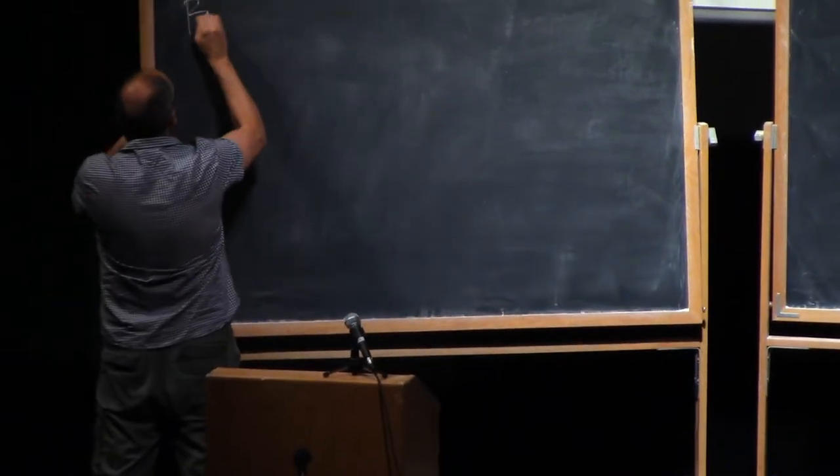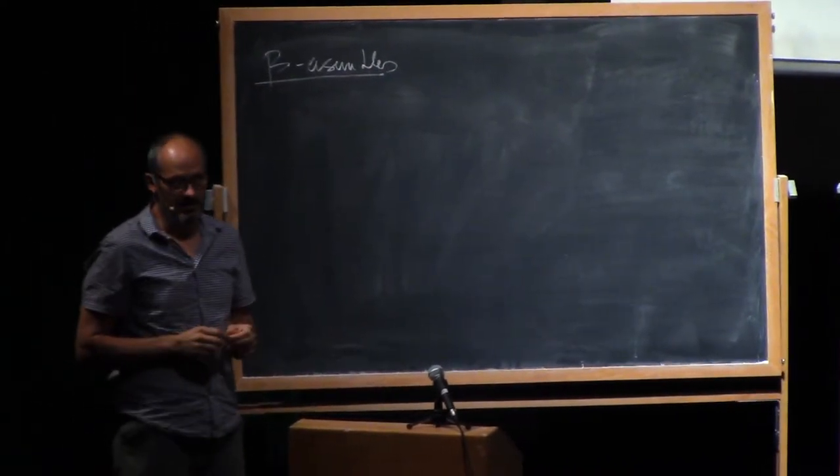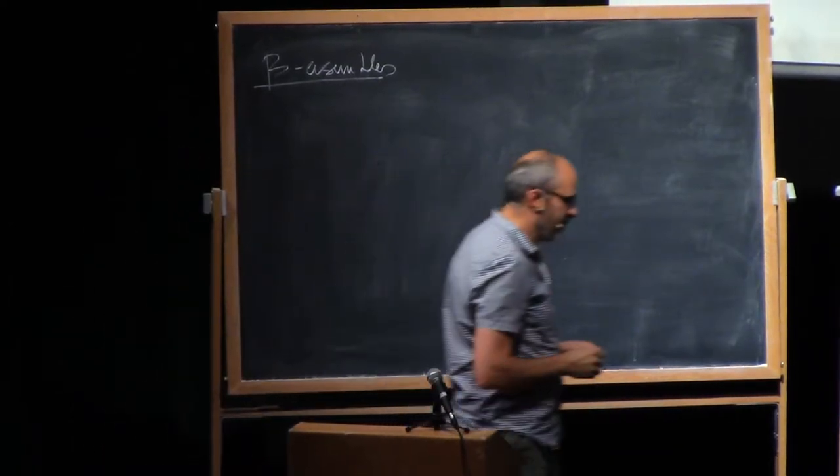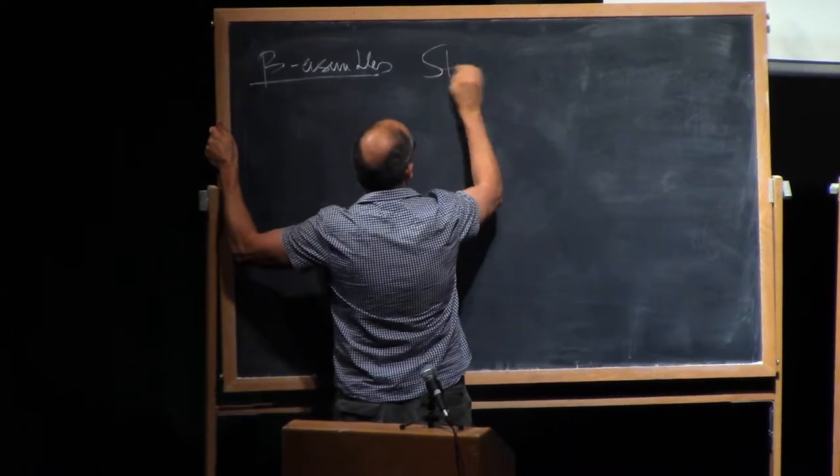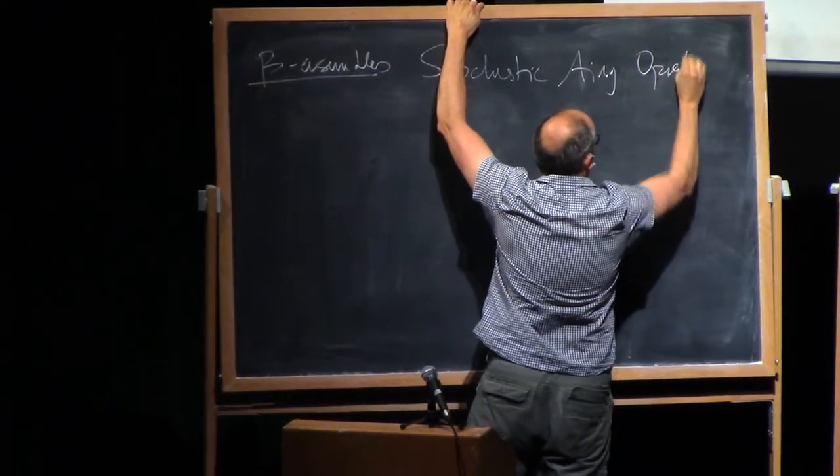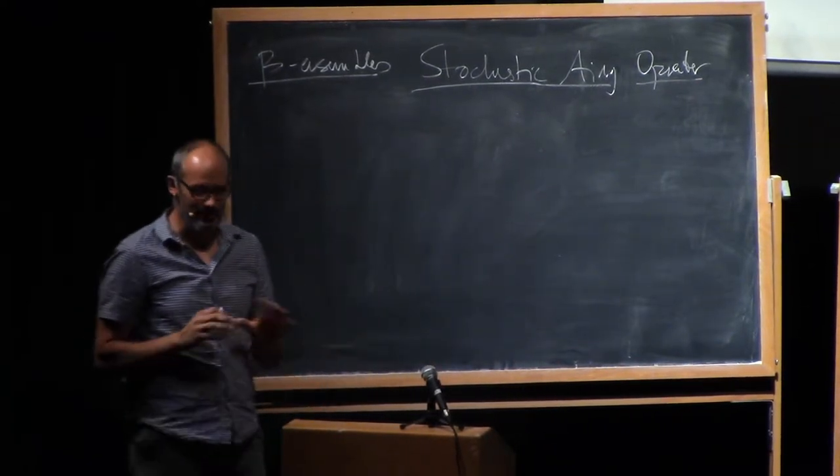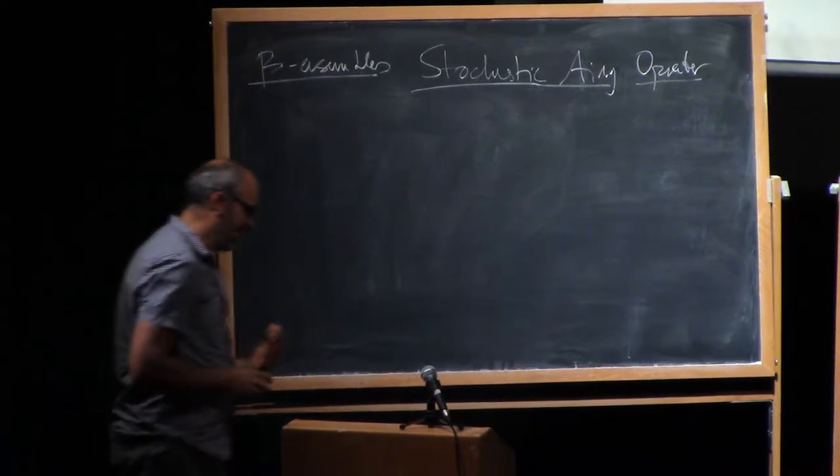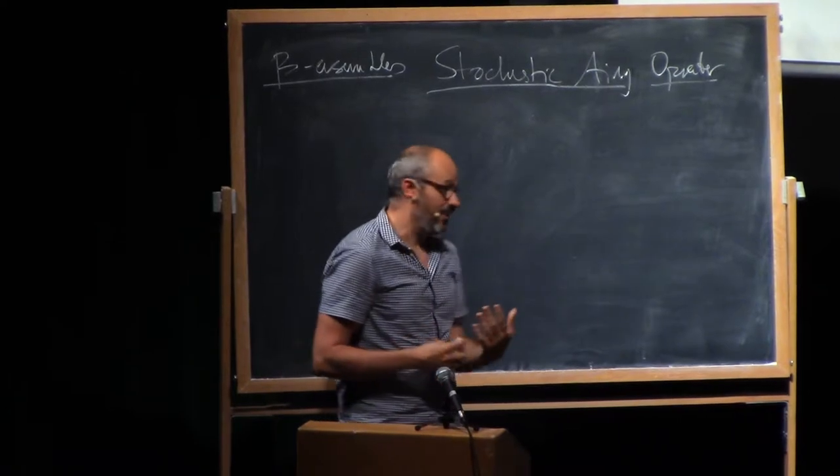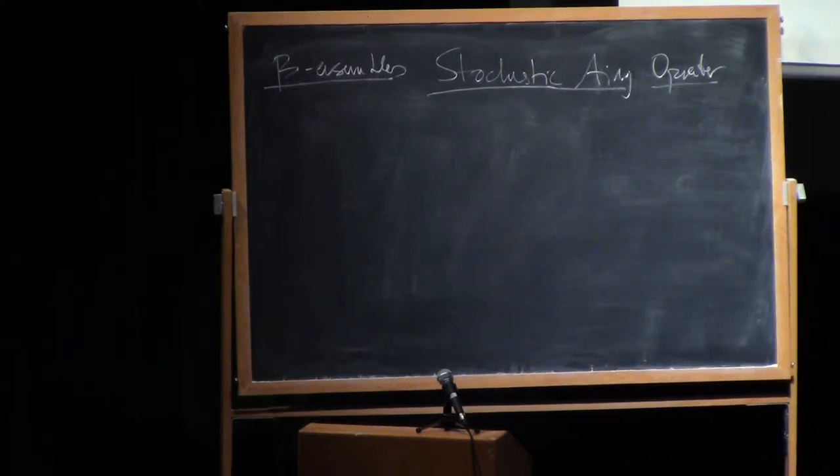Lecture is about beta ensembles. And the main theme of today's lecture is going to be stochastic Airy operator. But I decided I'm not going to leave you in the lurch completely about this lemma that we used, which is the representation of beta ensembles in terms of tridiagonal matrices. So you already know that you can represent the GUE as a tridiagonal matrix.